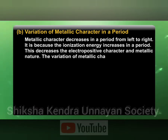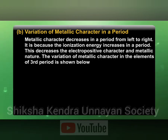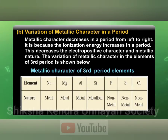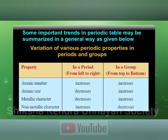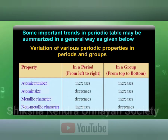The variation of metallic character in elements of the third period is shown below. This table indicates how atomic number, atomic size, metallic and non-metallic character increases or decreases in groups or periods.